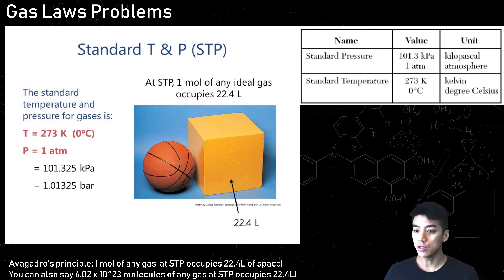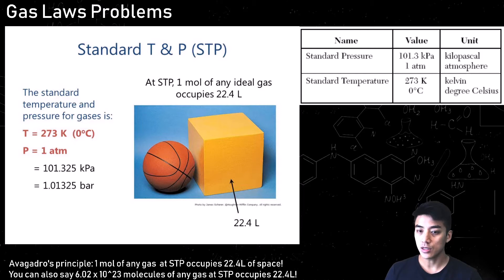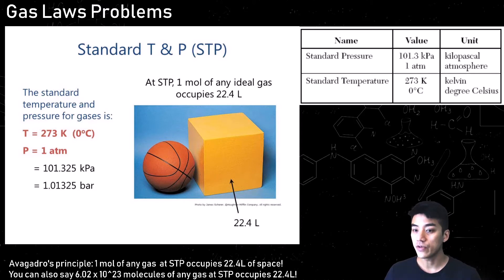You have to understand something called standard temperature and pressure. Standard temperature is 273 Kelvin or 0 degrees Celsius. Standard pressure is any pressure equivalent to sea level: 1 atmosphere, 101.3 kilopascals, or 14.7 pounds per square inch. Those are all equivalent.